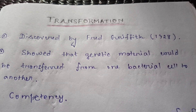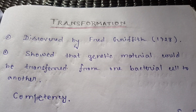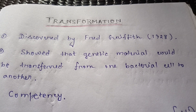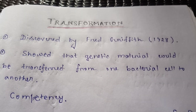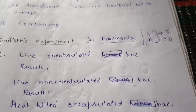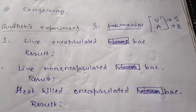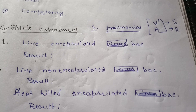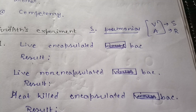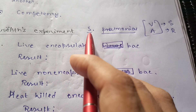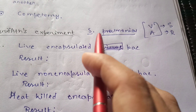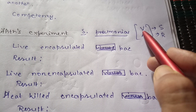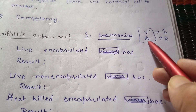To thoroughly understand the process of transformation, we need to know the famous Griffith's experiment. In 1928, Fred Griffith performed this transformation experiment. He took two strains of Diplococcus pneumoniae — now called Streptococcus pneumoniae — one is the virulent strain and the other is the avirulent strain.